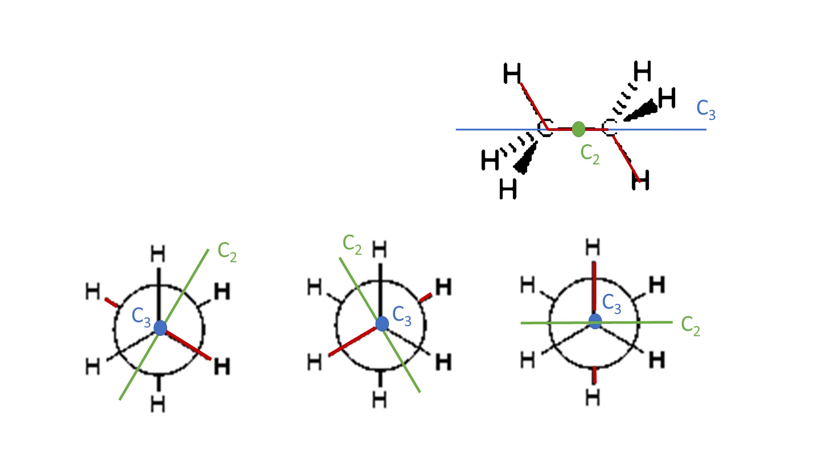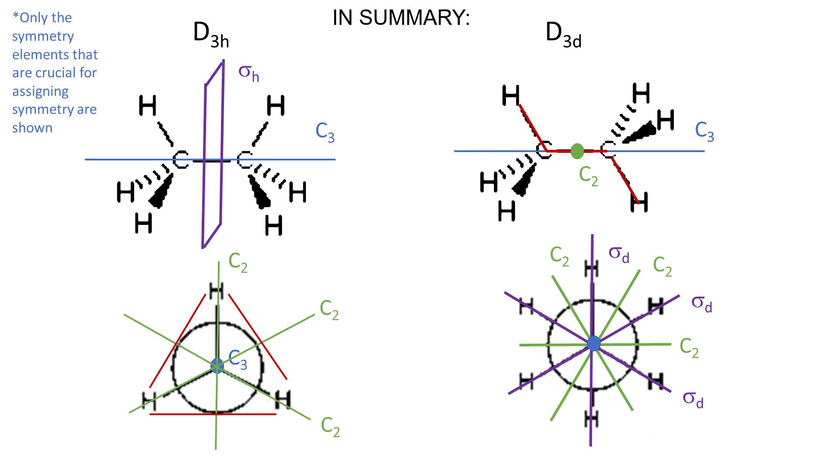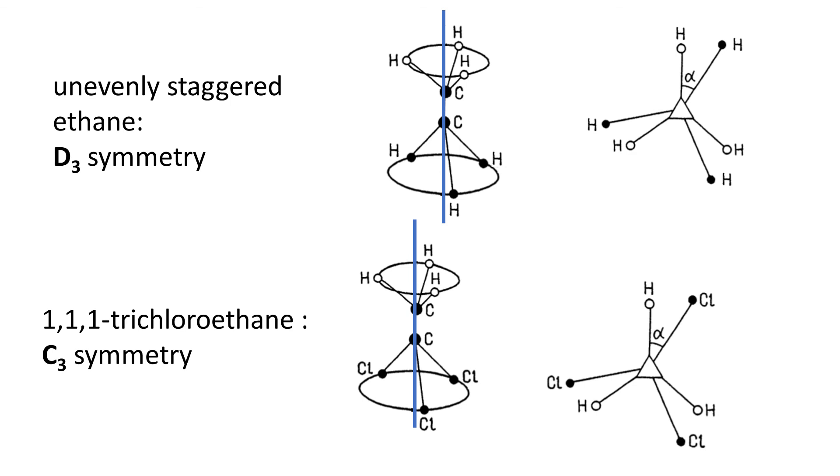There is no sigma H, but there are three sigma dihedral, and notice that it's characteristic to DND group that sigma Ds are in between C2s, looking from this perspective. Now how about if ethane was unevenly staggered? Easy, the symmetry would be then D3. What if we swap three hydrogens on one carbon with chlorines? Then it would be C3 because the top and bottom are different, and we lose the three C2s.